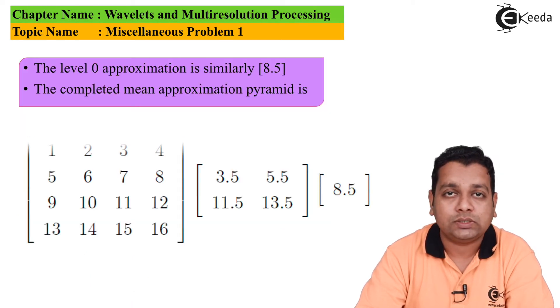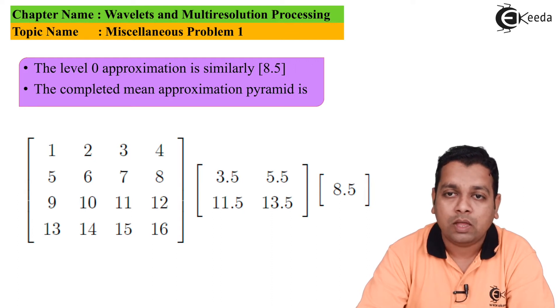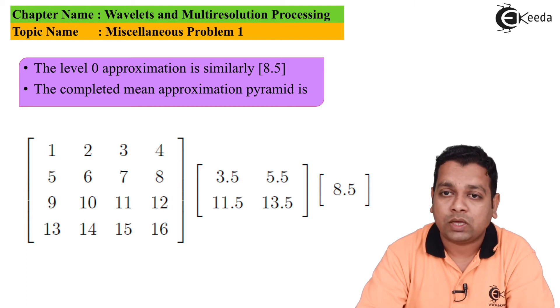The level 0 approximation, if we compute in similar fashion, we obtain the value of the entire image equal to 8.5. The completed mean approximation pyramid thus we can represent here. This is level J having the original image sample 1, 2, 3, 4, 5, 6, 7, 8, 9, 10, 11, 12, 13, 14, 15, 16. The next step has 3.5, 5.5, 11.5, 13.5, and lastly the apex of the pyramid shows value 8.5.